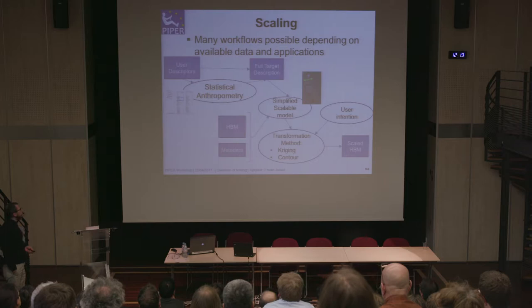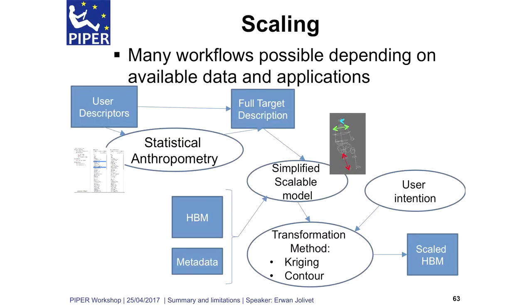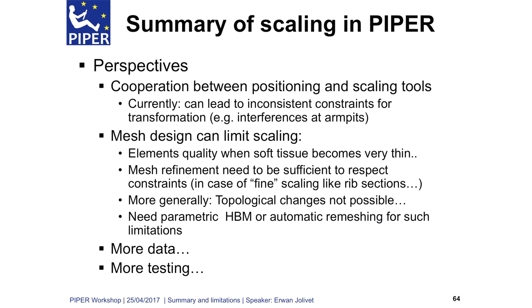This figure shows how we can organize several boxes or steps in the scaling workflow. We have several paths to reach the final scaled model. For the perspective of scaling, we think a cooperation between positioning — the next session after lunch — and scaling is needed, to be able to adapt the position of limbs, mainly to the trunk shape, for example when we enlarge the width of the trunk.